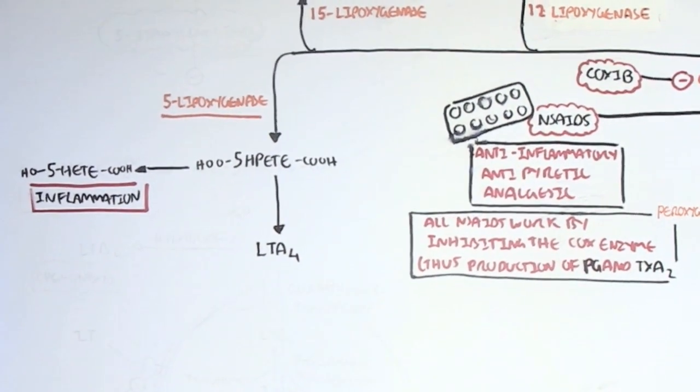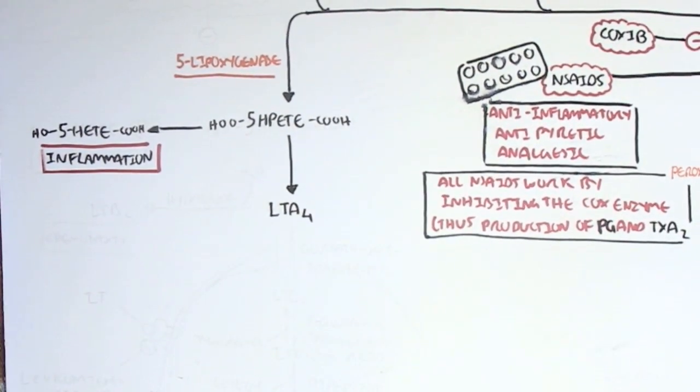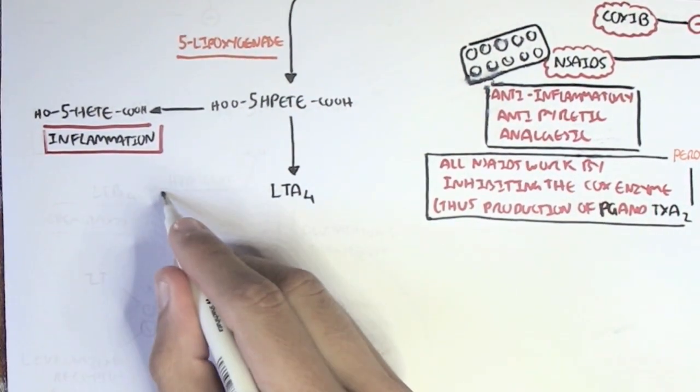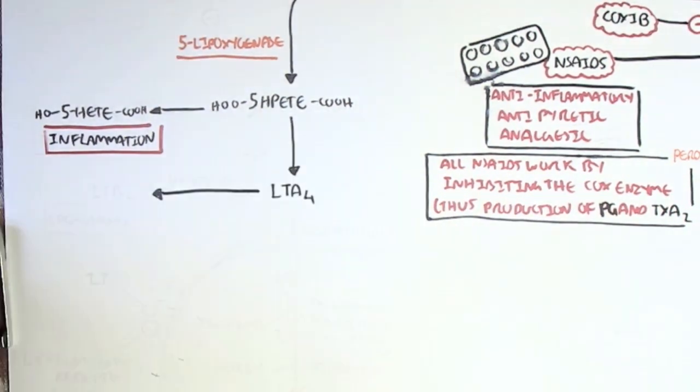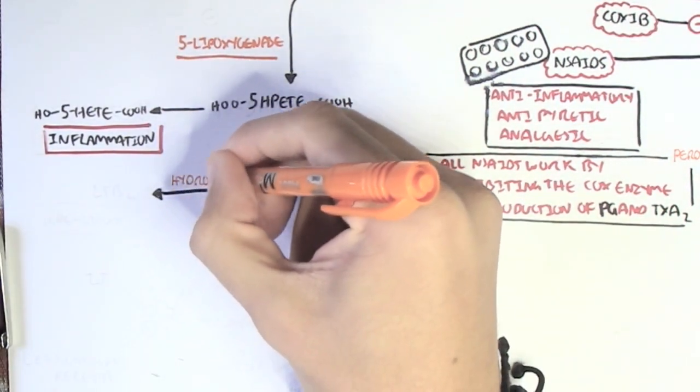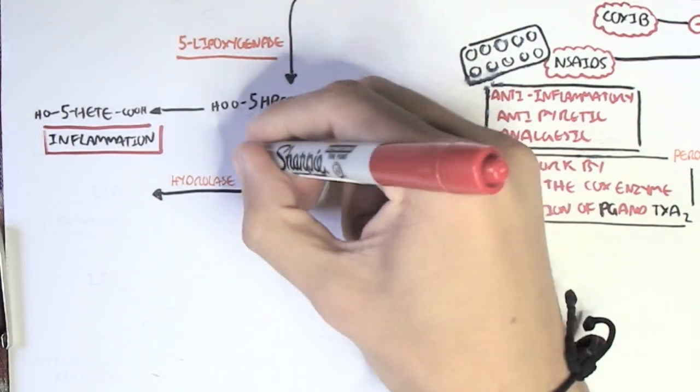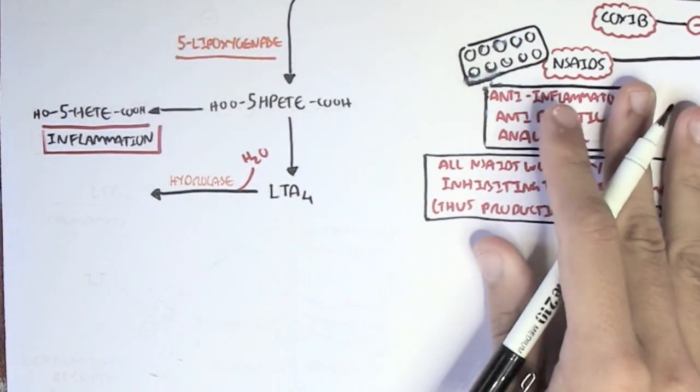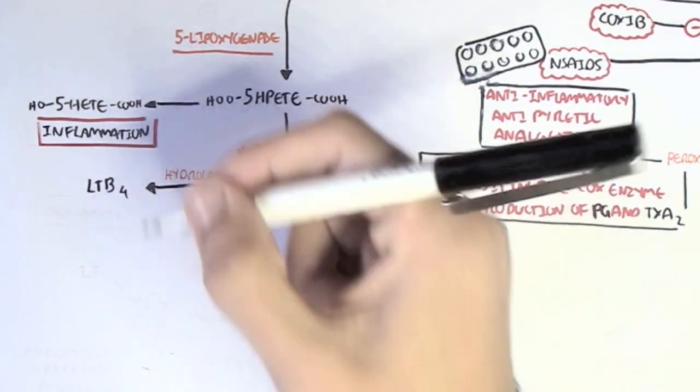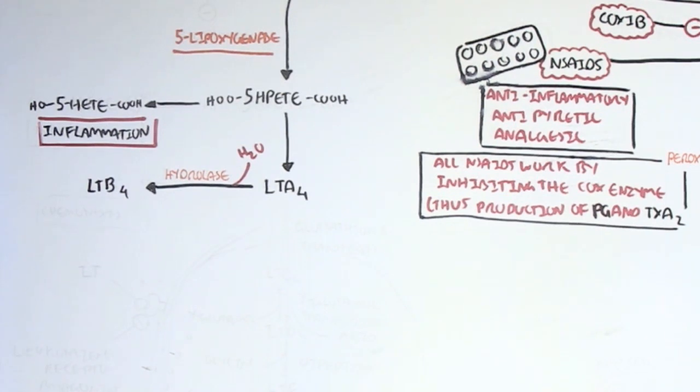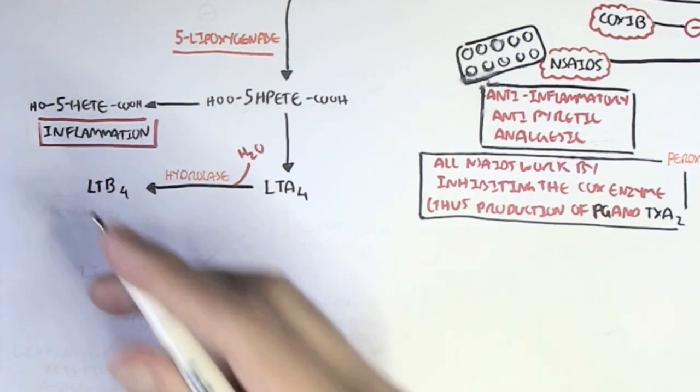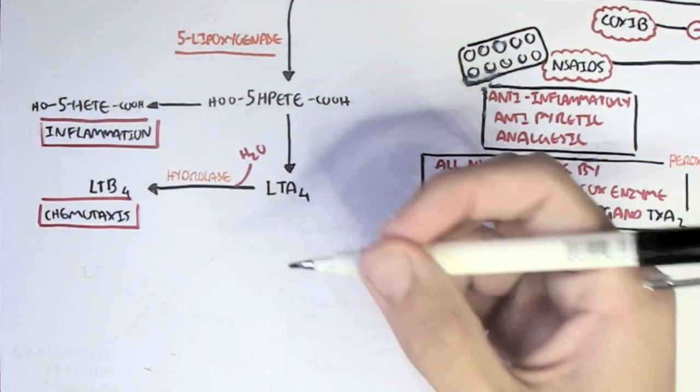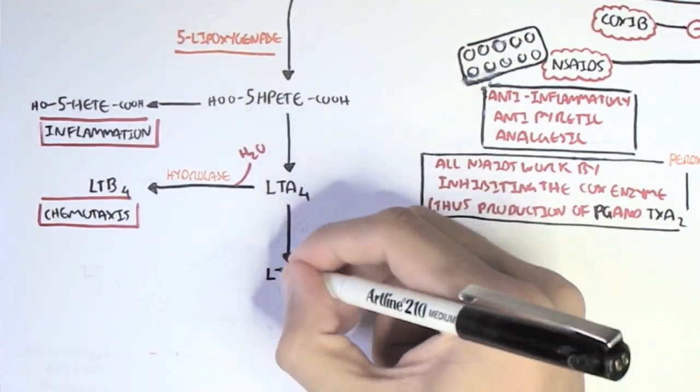Alternatively, 5-HPETE can convert to leukotriene A4. Leukotriene A4 can be hydrolyzed to form leukotriene B4 by the enzyme hydrolase. Leukotriene B4 acts as a chemotaxis in the inflammatory response.